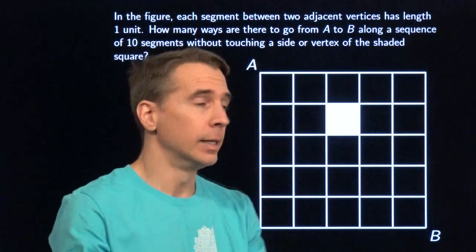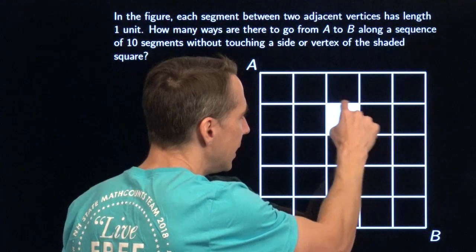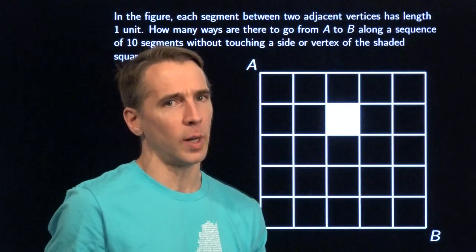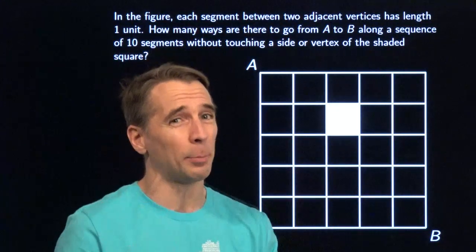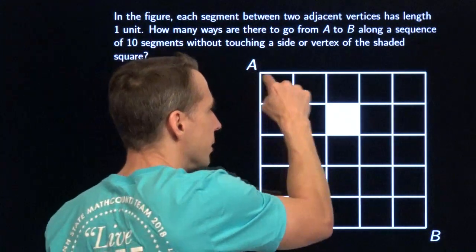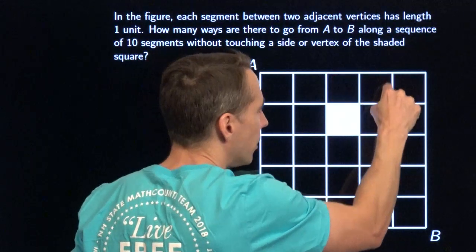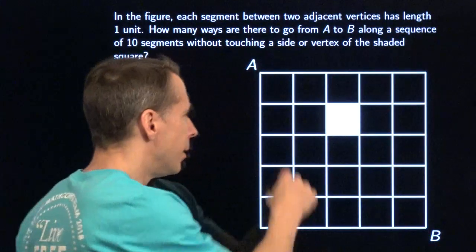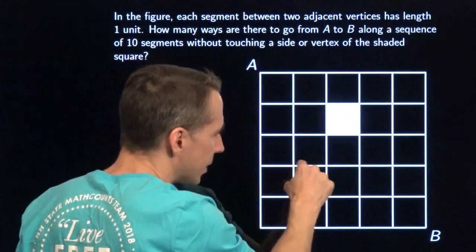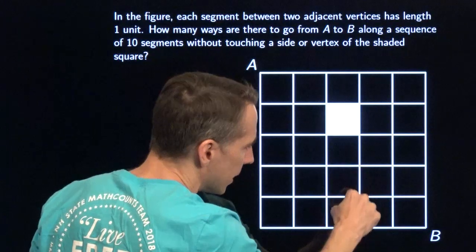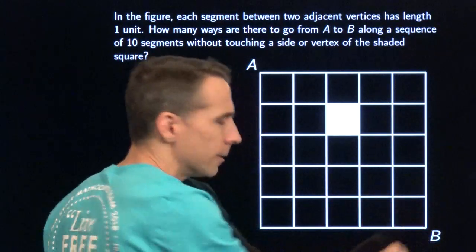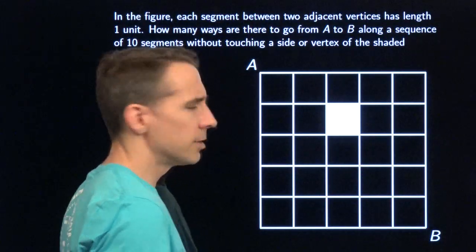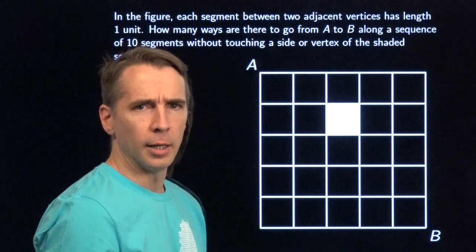But we're not allowed to hit any of the corners of that white square, so we have a complication. For example, we could go over, down, over, down — or go over one, down and cut through here, down, over, down, over. This is really complicated.